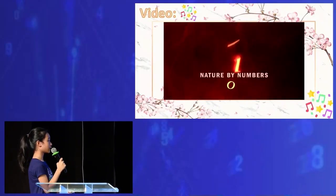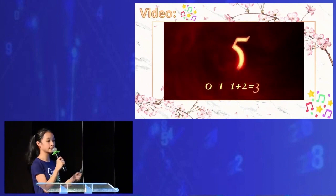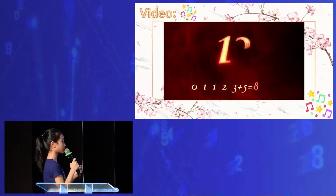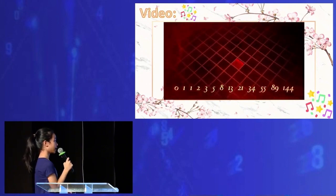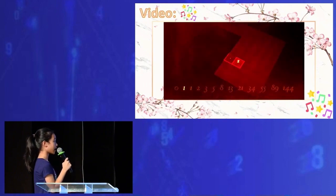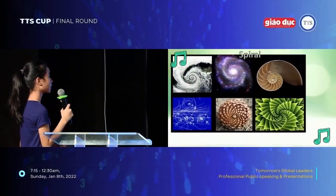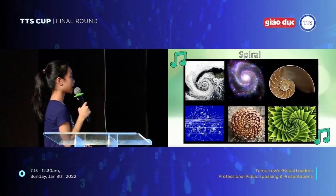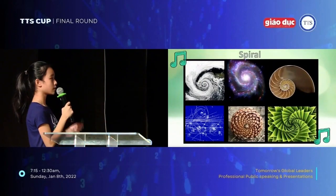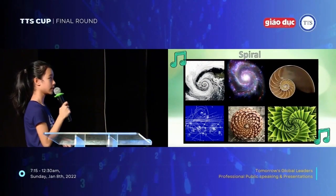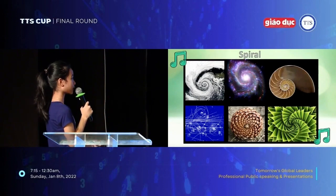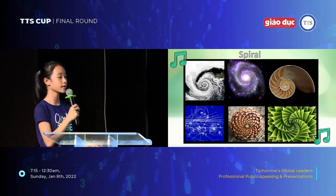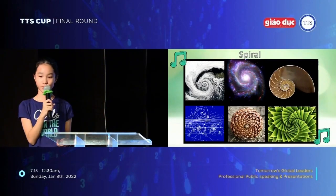In this video, you can see that each number in the Fibonacci sequence is the sum of the two previous numbers, and together they make a nice-looking spiral. We can see that the spiral appears all around us — like the galaxy, the leaf, or the shell — and it's very beautiful.